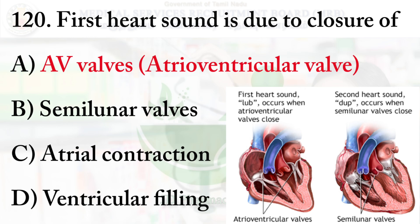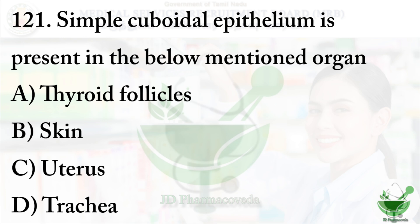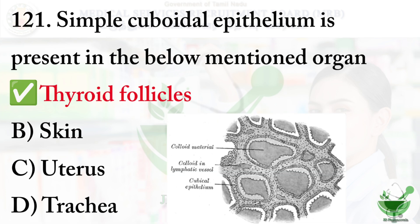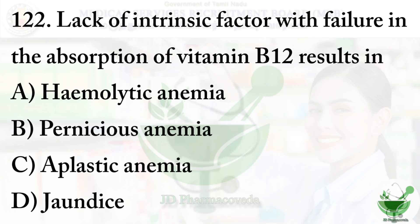Question 121: Simple cuboidal epithelium is present in which organ? Option A: thyroid follicles, option B: skin, option C: uterus, option D: trachea. The right option is option A, thyroid follicles.